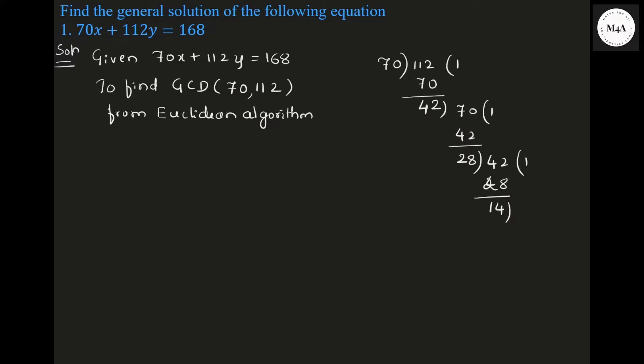Next, 14 divides 28: 14 into 2 is 28, remainder 0. This is the extended Euclidean algorithm. What is your GCD? GCD is the last non-zero remainder. The last non-zero remainder is 14.